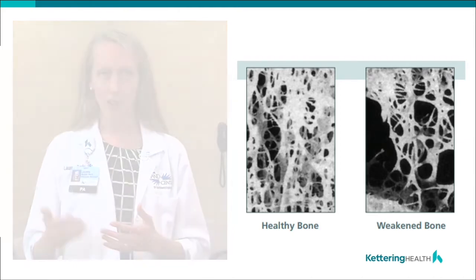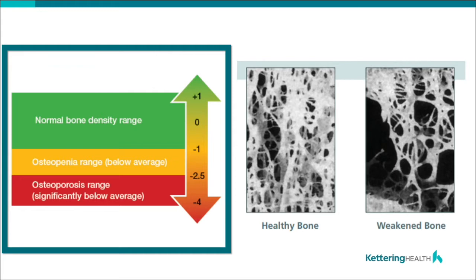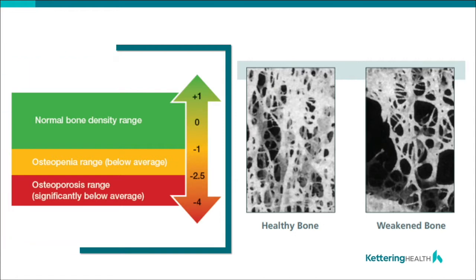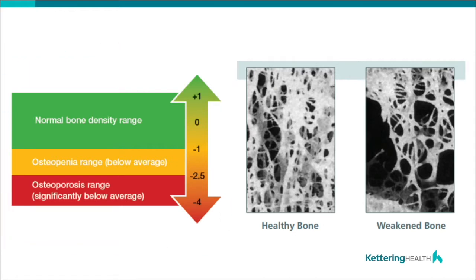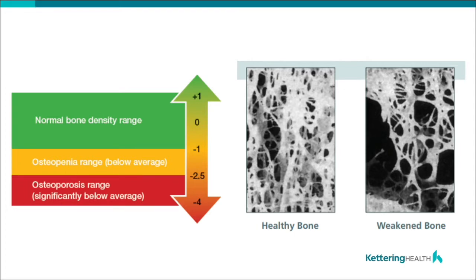On the left side, we have a diagram demonstrating the spectrum of bone density. There's normal healthy bone, then osteopenic bone, which is in the middle range, and then osteoporosis. Osteoporosis means there's a significant decrease in bone mineral density, and osteopenia is in that middle range.